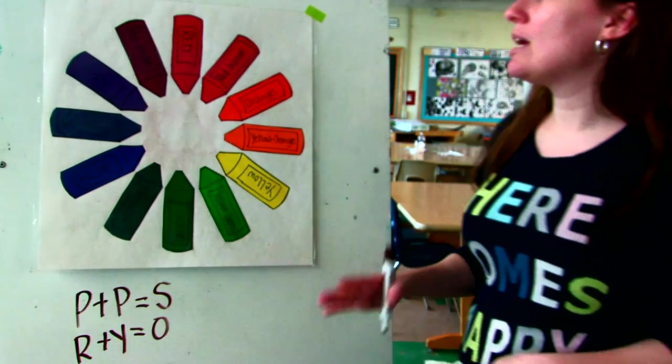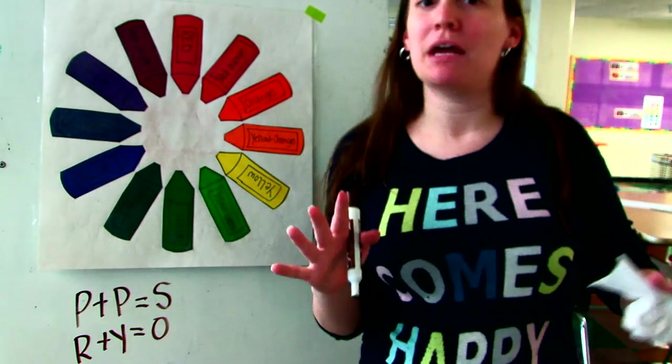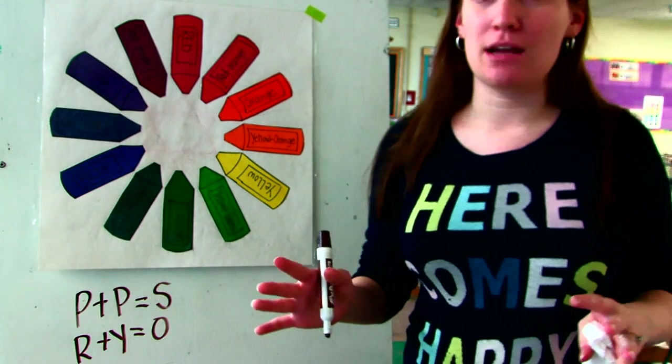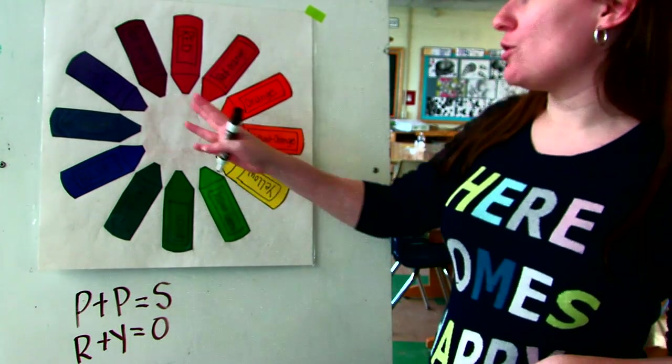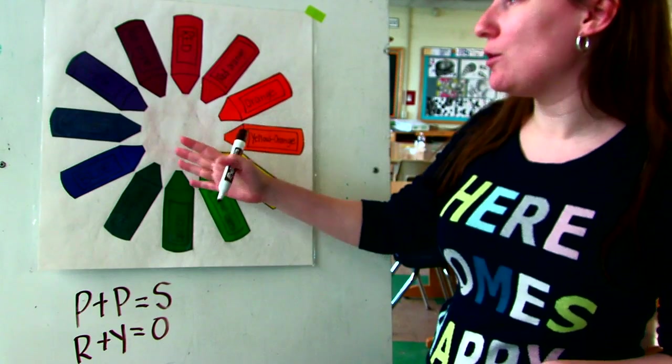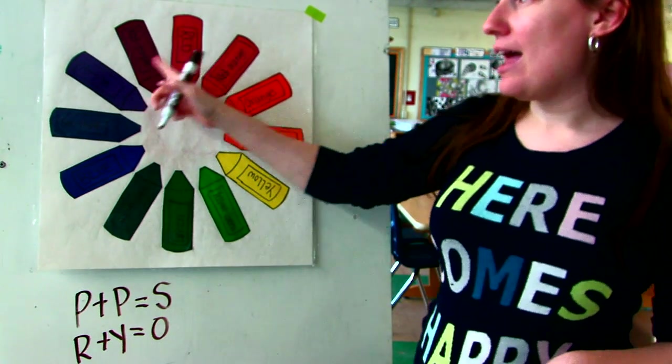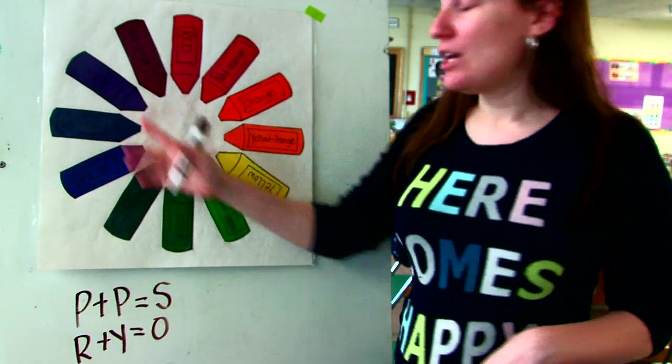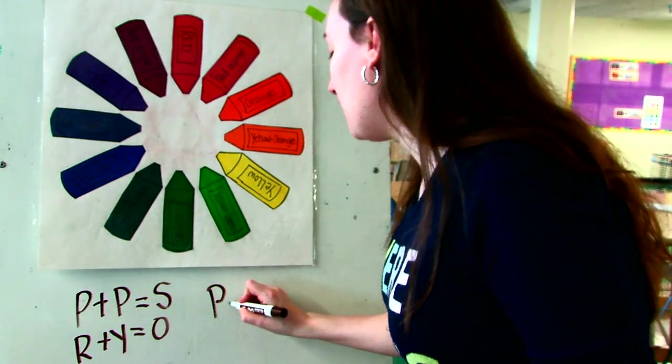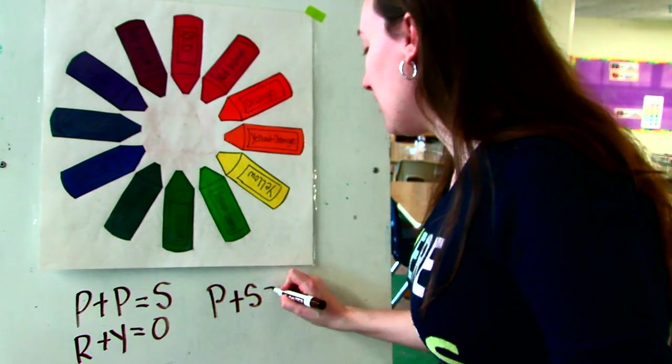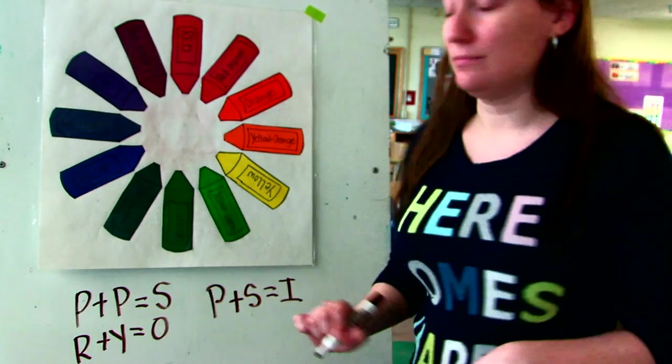Very simple, right? Now we're going to kick it up a notch to our intermediate colors. Our intermediate colors are the colors that happen when you mix a primary and a secondary color. So primary plus secondary equals intermediate.